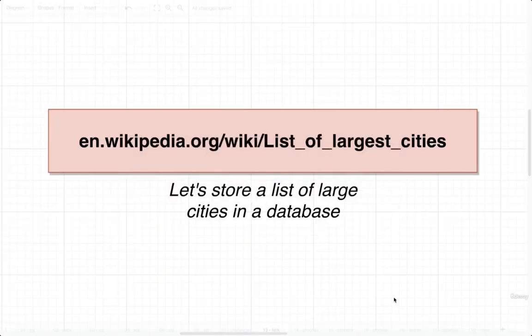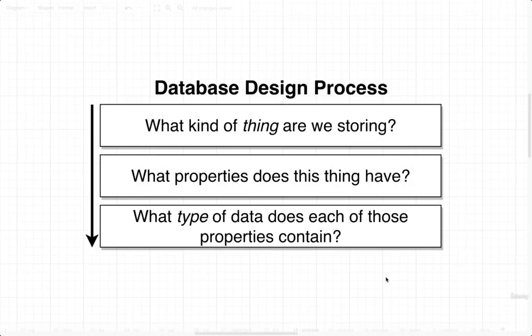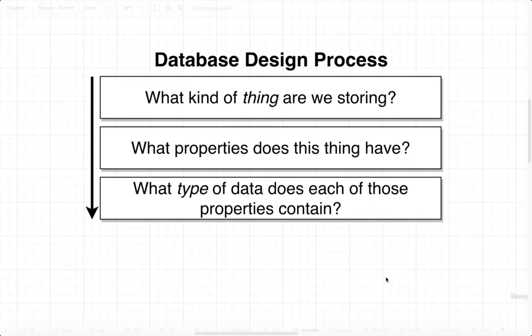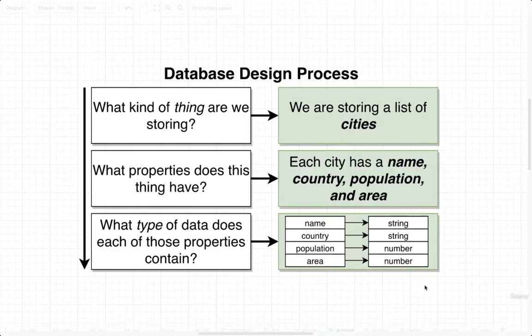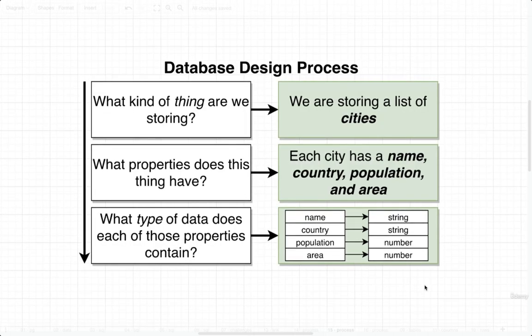Let's go through the entire process of setting up a database to store a list of cities with these four different pieces of information. To understand how we're going to design and set up our database, we're going to go through a little design process that we'll repeat many times in this course. We're going to ask ourselves three different questions and use the answers to set up our database.